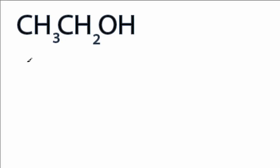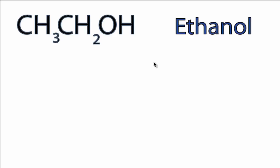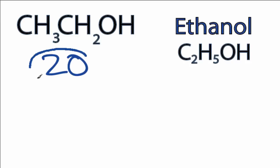This is the CH3CH2OH Lewis structure. It's also known as ethanol, or C2H5OH — they're all the same thing. For CH3CH2OH, we have a total of 20 valence electrons.